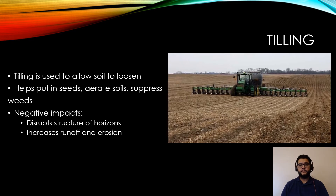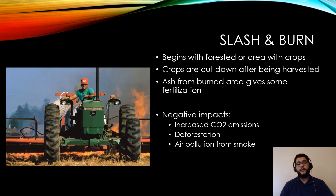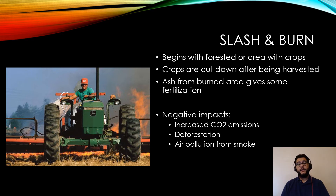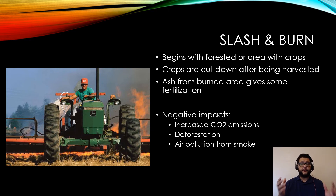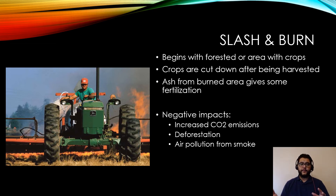Slash and burn involves a forested area or an area that already has crops. You grow the crops, and to replenish the soil, you burn the forested area or the harvested and cut-down crops. The ash from the burn helps refertilize the soil somewhat.